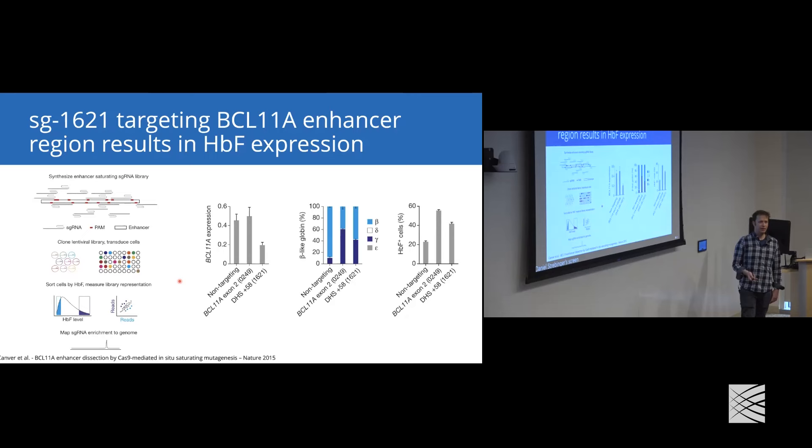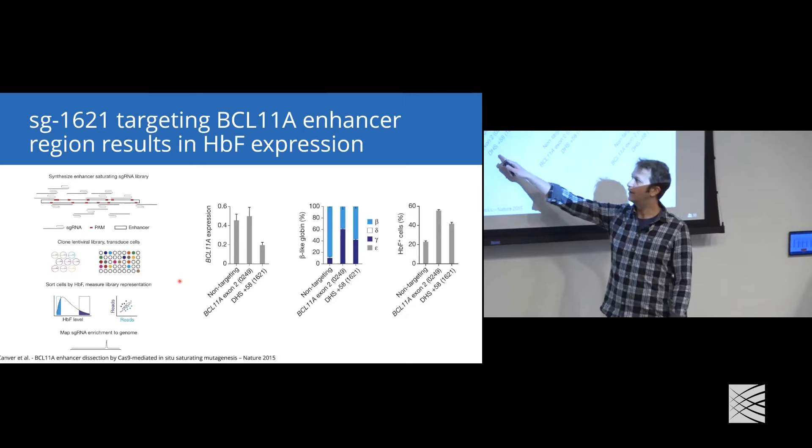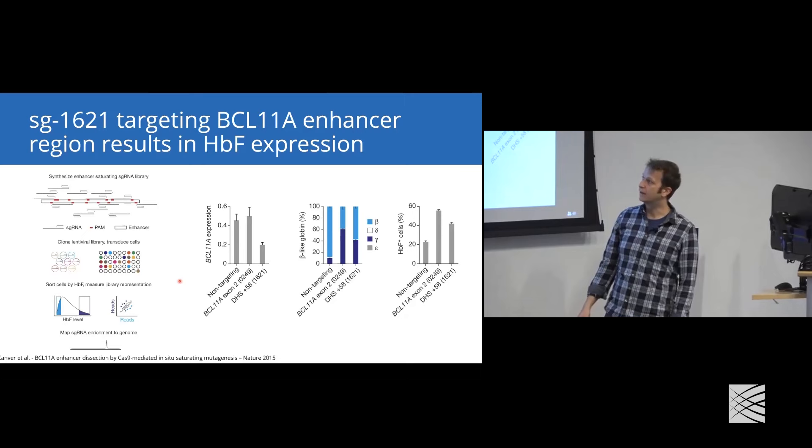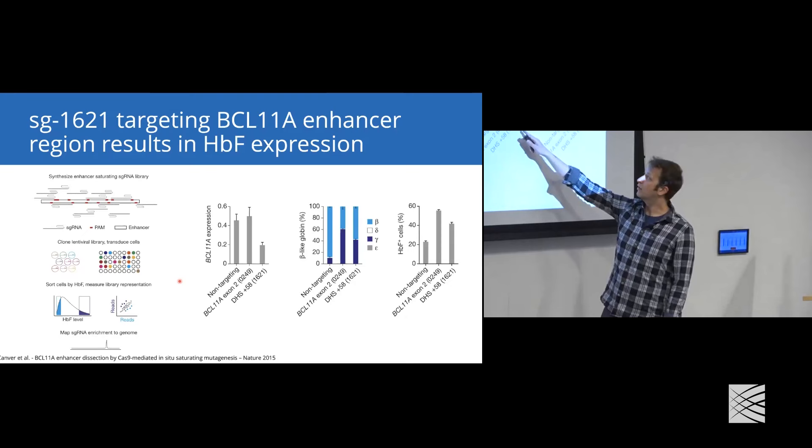To do this, you can clone an array of guide RNAs for the region of interest, put that into cells, and then sort cells by their expression level of fetal hemoglobin. Then finally, you can map these guide RNAs back onto the genome. If you do a screen like this, you find a guide RNA called sg1621, which specifically down-regulates BCL11A expression. It also results in higher gamma-globin expression and higher fetal hemoglobin in cells.